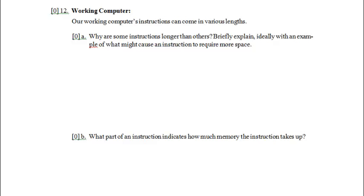Welcome to problem 12 of the Computer Science 121 2013 Winter 2 practice final exam screencast. This is a working computer problem, and if you haven't looked over our working computer it might not make a lot of sense, but this problem is actually pretty general to any computer with an instruction set where the instructions vary in length. It says our working computer's instructions can come in various lengths, which is true. Why are some instructions longer than others? Briefly explain, ideally with an example of what might cause an instruction to require more space.